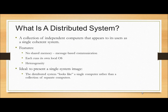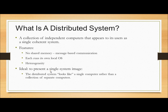So what is a distributed system? A collection of independent computers that appears to its users as a single coherent system. The features of distributed systems are no shared memory, each runs its own local OS, and heterogeneity. The ideal characteristic is to present a single system image — the distributed system looks like a single computer rather than a collection of separate computers.